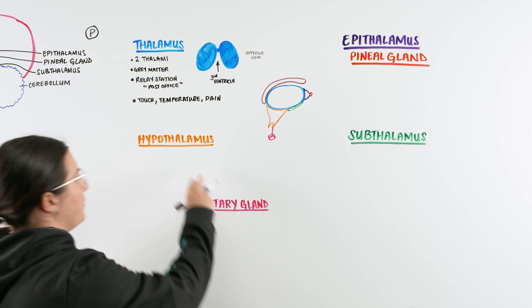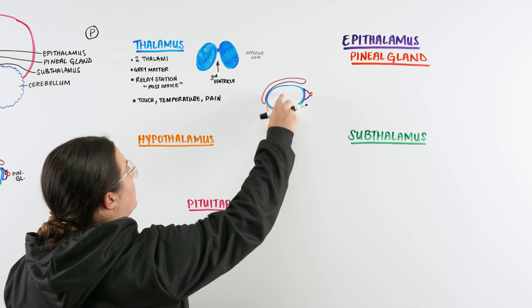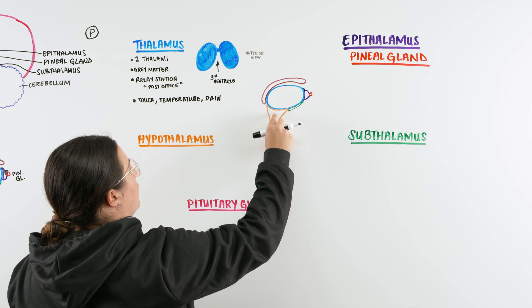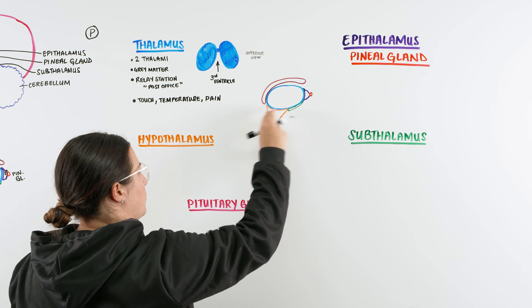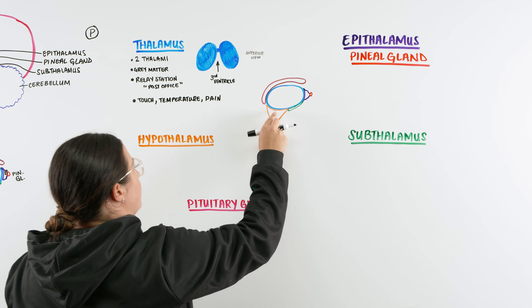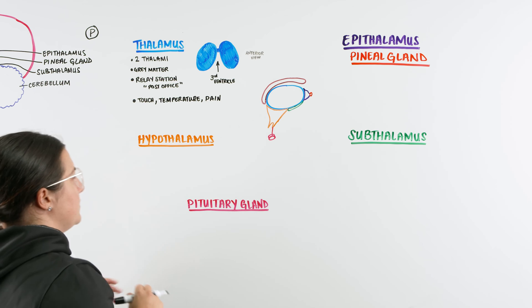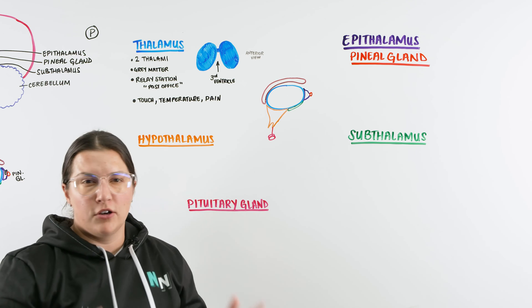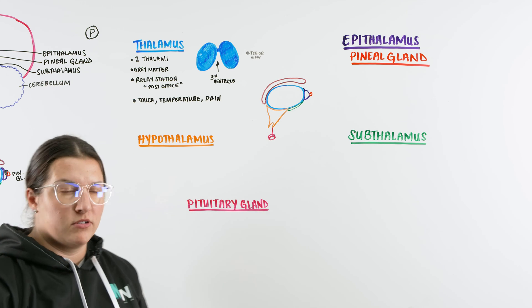Then we can move on to the hypothalamus. So we talked about the thalamus, which is right here in the middle. We're going to talk about the hypothalamus, the area that's underneath the thalamus. And if we look at the hypothalamus, one of the main functions of the hypothalamus is homeostasis.